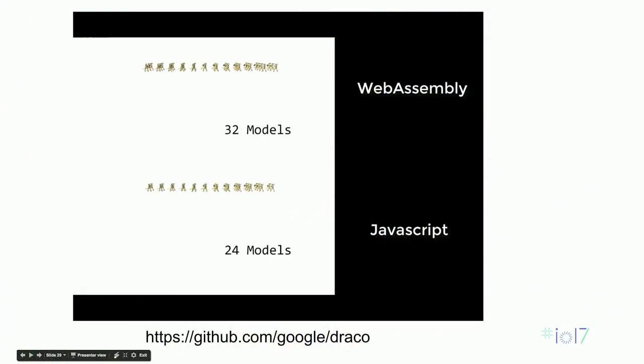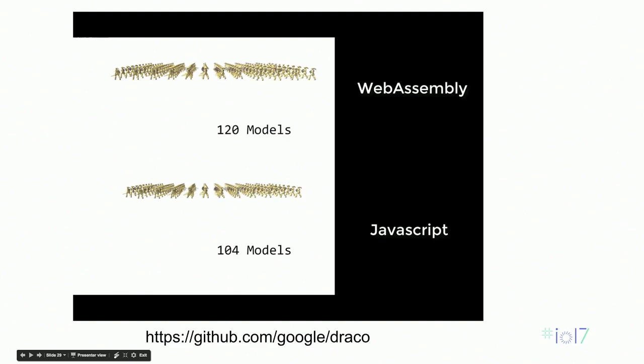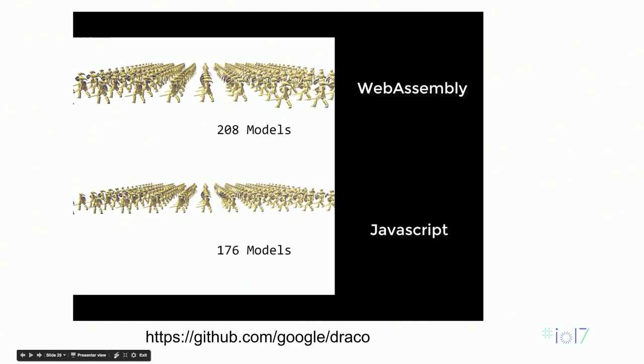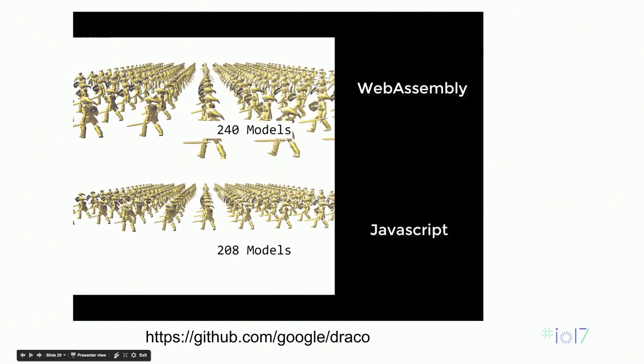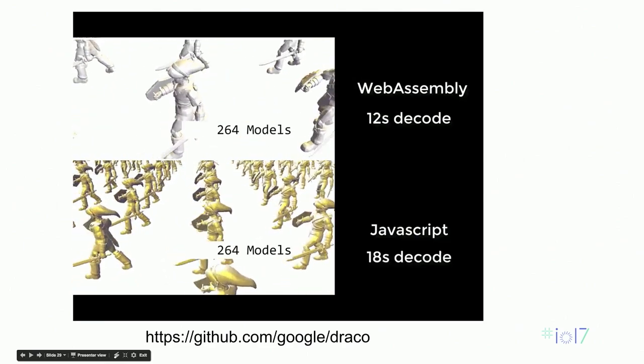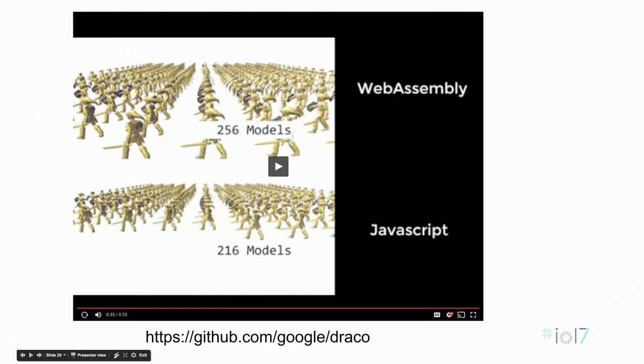There's also an open source project at Google about compressing 3D point meshes — great for use with WebGL. The team has done a lot of benchmarking. WebAssembly decodes the model in 12 seconds, but asm.js takes 18 seconds. WebAssembly runs in two thirds of the time of the equivalent asm.js. And this is just the runtime — the actual parse time for asm.js is not counted here, and that's much, much higher.